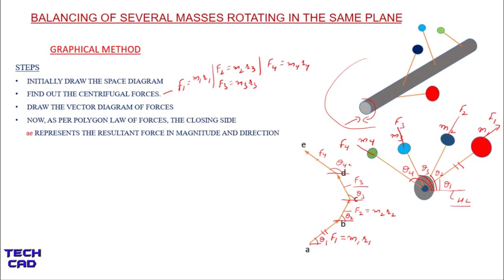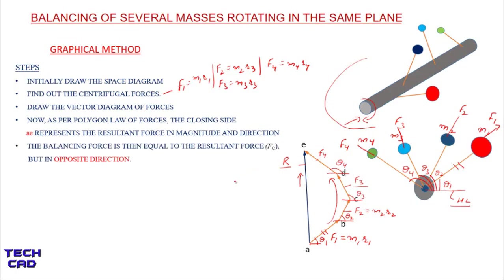As per the polygon law of forces, E is the last point and A is the initial point. You have to join these points — this becomes the resultant R for the complete vector diagram of forces. The direction of this resultant is from E toward A, so the resultant should be in this direction. The balancing force has the same magnitude as the resultant but in the opposite direction.